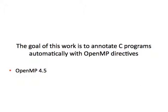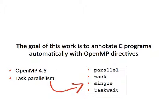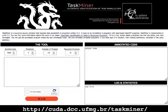We are talking about OpenMP 4.5, which contains annotations to reveal task parallelism. That means that we shall be running multiple tasks in multiple processors. To achieve this end, we will be inserting annotations like parallel, task, single, and taskwait in programs.